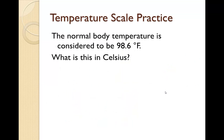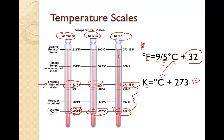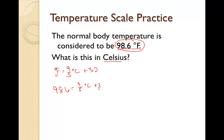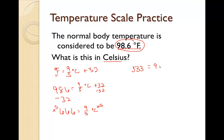Let's do some practice problems. Normal body temperature is 98.6 degrees Fahrenheit — what is this in Celsius? Using the formula: degrees Fahrenheit equals 9/5 degrees Celsius plus 32. We plug in 98.6: 98.6 equals 9/5 degrees Celsius plus 32. Subtract 32: 66.6 equals 9/5 degrees Celsius. Multiply each side by 5: 333 equals 9 degrees Celsius. Divide each side by 9: that comes out to be 37.0 degrees Celsius.